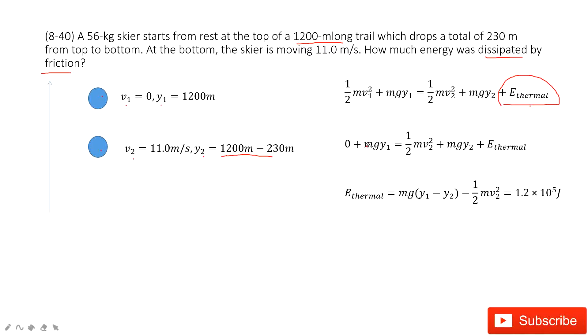Then we input the known quantities. v1 is 0, y1 is given, v2 is given, y2 is given. Very easily you can do this calculation. Get the final answer for the thermal energy: 1.2 times 10 to the power 5 joules. Thank you.